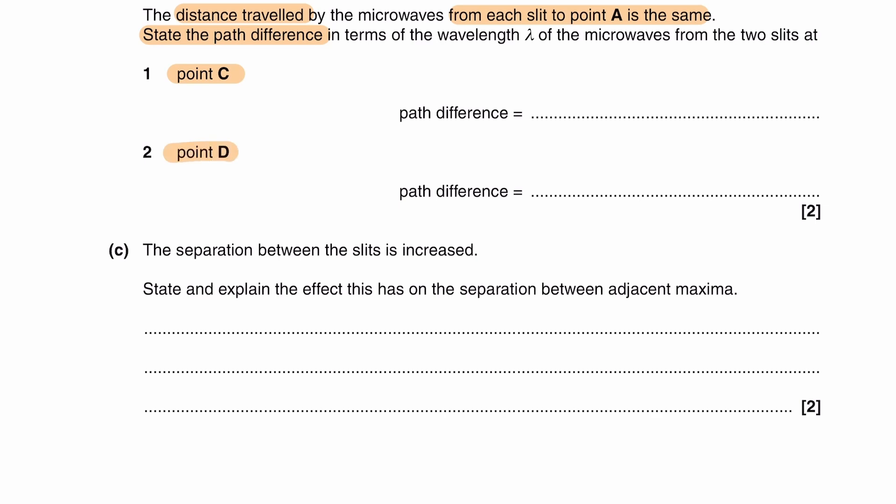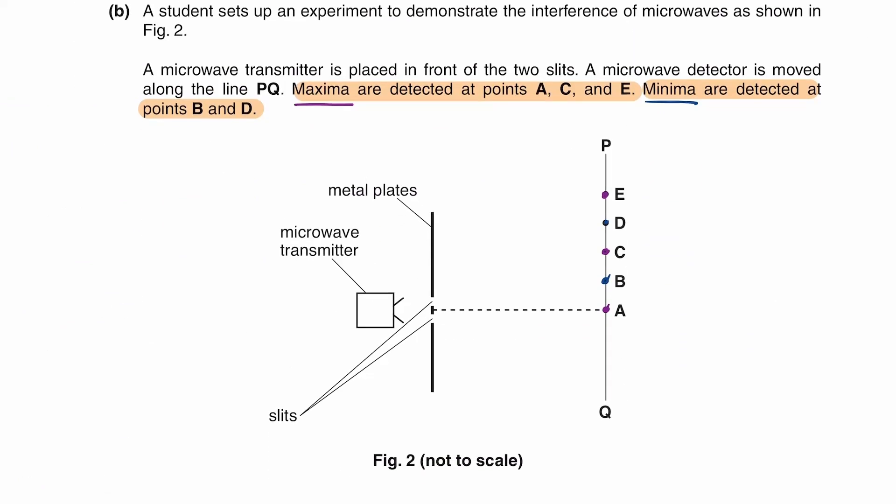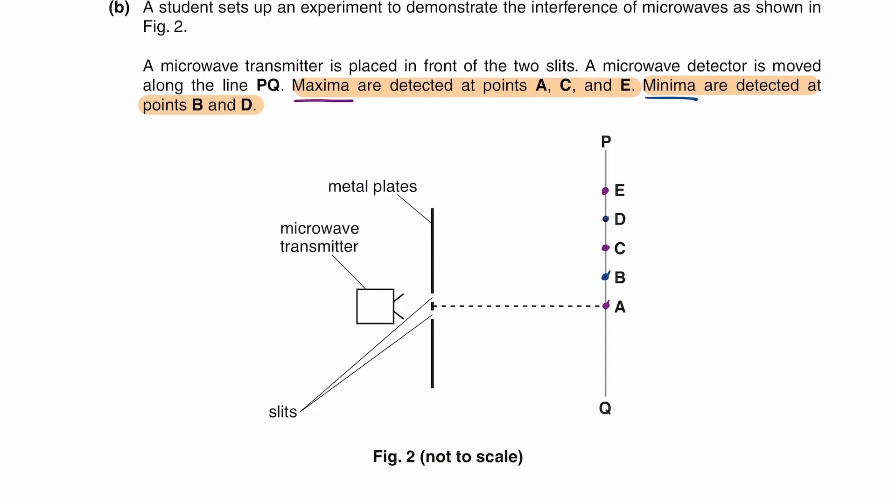Right, so looking at that first sentence, the distance travelled by the microwaves from each slit to point A is the same. So what that means is, we're told if I were to draw on two rays, from the top slit to A, from the bottom slit to A, those two lengths are identical. If the two lengths are identical, then the difference in distance is 0. So the path difference would then be 0 lambda, or just 0. And at the point where the path difference is 0 lambda, we have our 0th order maximum. So we can say that N is 0 at this point.